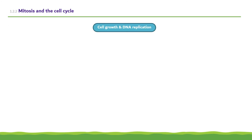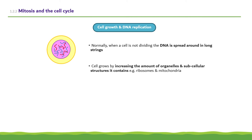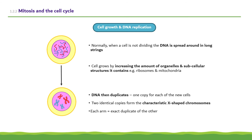Looking at cell growth and DNA replication in more detail. Normally, when a cell is not dividing, DNA is spread around in long strings. The cell first grows by increasing the amount of organelles and subcellular structures it contains, like ribosomes and mitochondria. The DNA then duplicates, creating one copy for each of the new cells. The two identical copies form the characteristic X-shaped chromosomes, with each arm being an exact duplicate of the other.